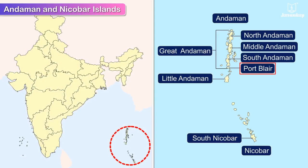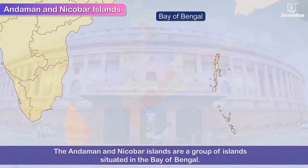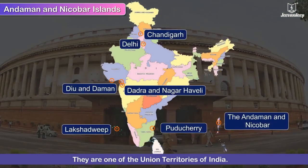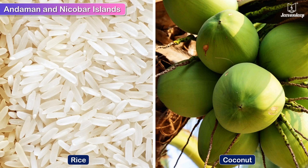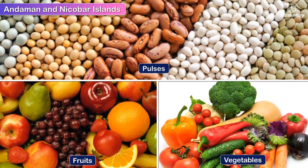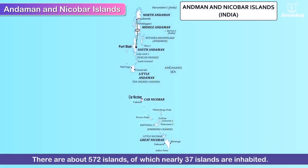The Andaman and Nicobar Islands are a group of islands situated in the Bay of Bengal and are one of the Union Territories of India. Port Blair is the capital of the Andaman and Nicobar Islands. While rice and coconut are widely grown here, the climate is also suitable for growing pulses, fruits and vegetables. This territory consists of two distinct groups of islands — Andaman and Nicobar — with about 572 islands, of which nearly 37 are inhabited.